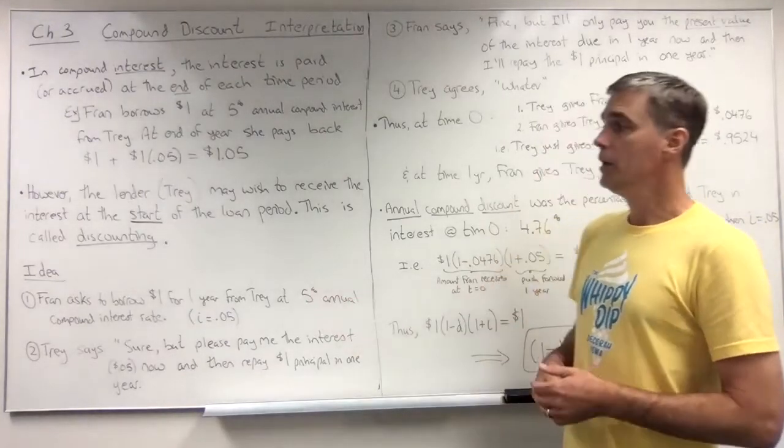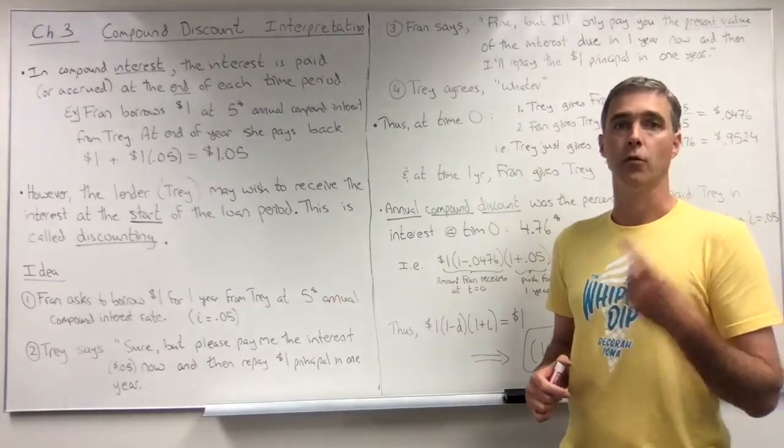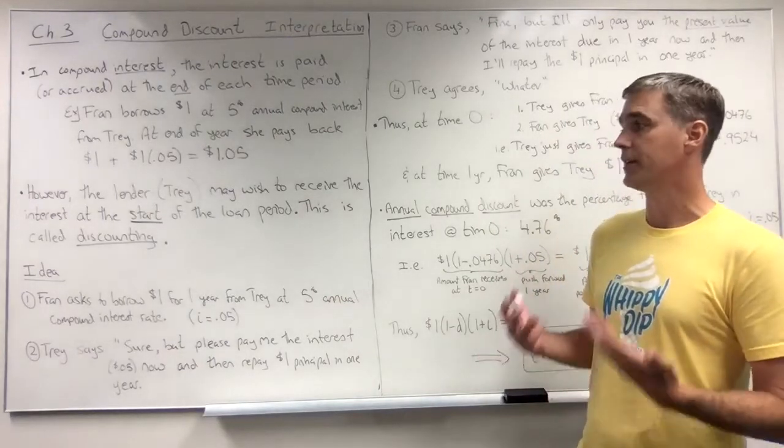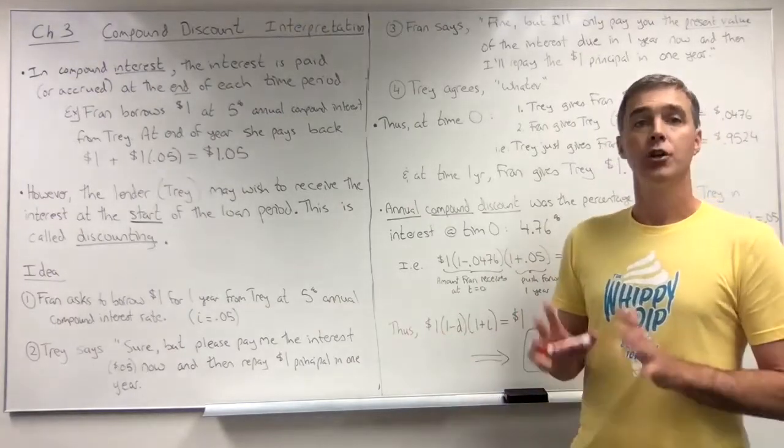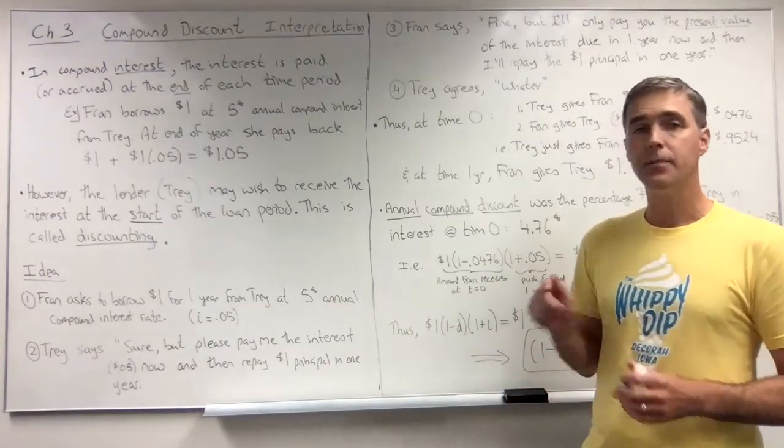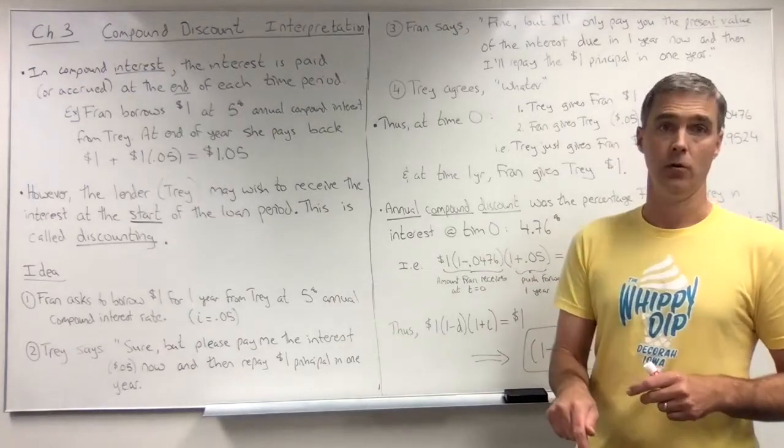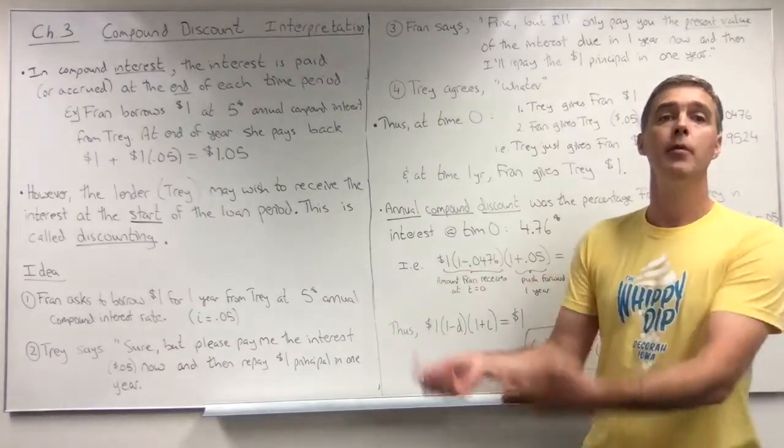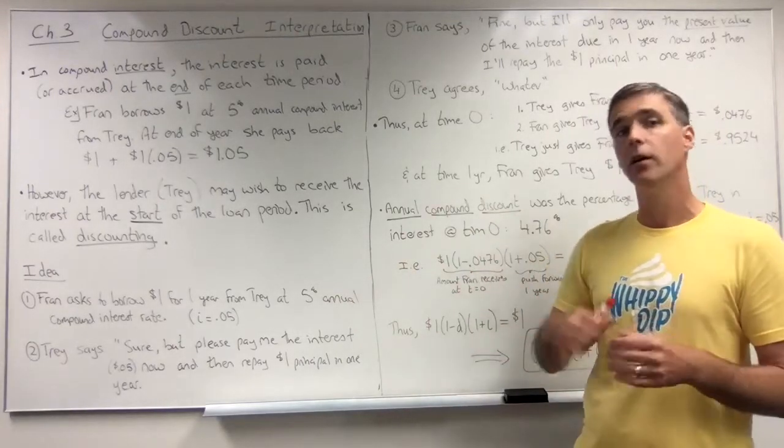Okay, so the situation begins when Fran asks to borrow one dollar for one year from Trey at five percent annual compound interest. And Trey says sure, but please pay me the interest, five cents, right now at time zero, and then pay me back just the principal in one year's time. So give me the interest now, principal in a year.